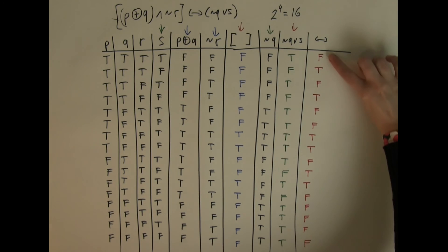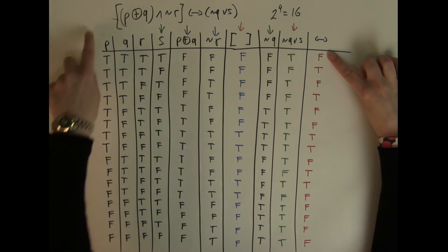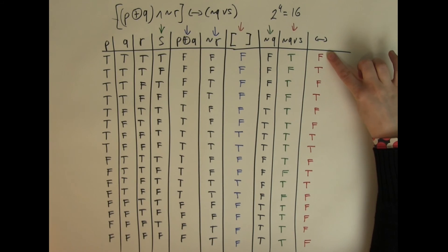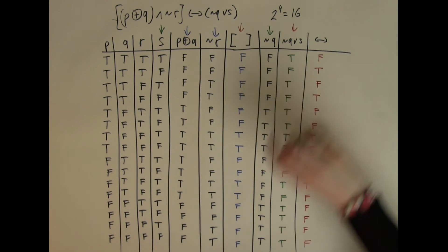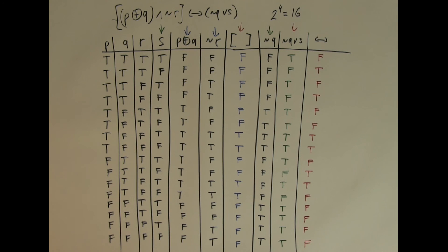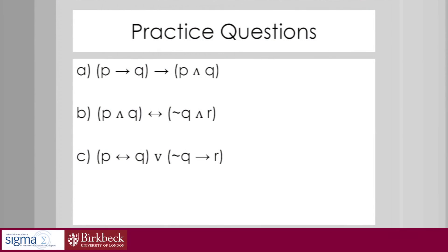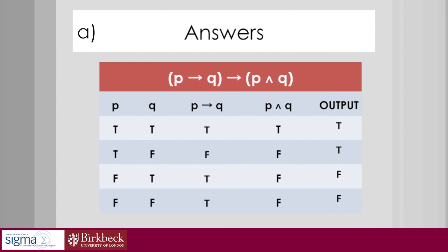So this is the final answer for this long and rather complicated Boolean expression. As you can see there are quite a few different combinations of false and true. I hope that by now you have been able to build a good understanding of Boolean expressions and truth tables. I have a few last practice questions for you, and the answers will follow.